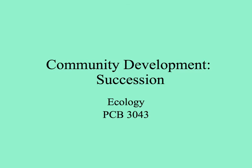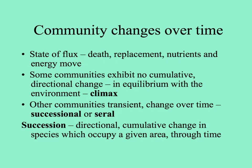Communities aren't static over time — they change, and this process is called succession. Every community is in a state of flux. Individuals come into the community, they die, they're replaced by others of their species or perhaps another species, and the non-living parts of the community move as well — nutrients and energy. Certain communities stay relatively stable for long periods of time, showing no cumulative directional change. These are what we refer to as climax communities, that are in equilibrium with the environment.